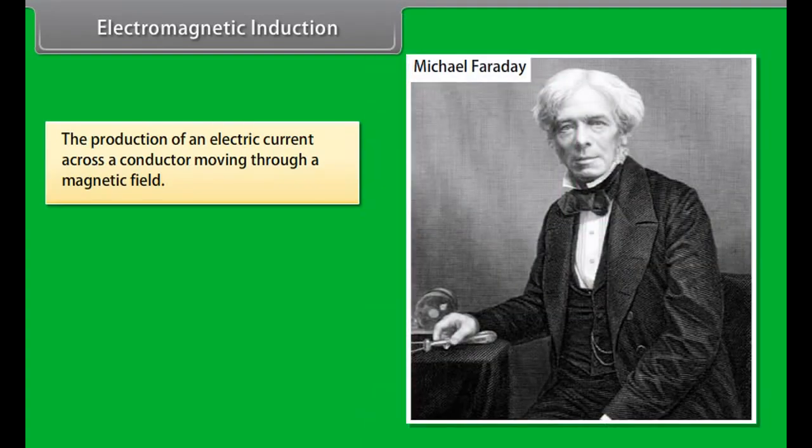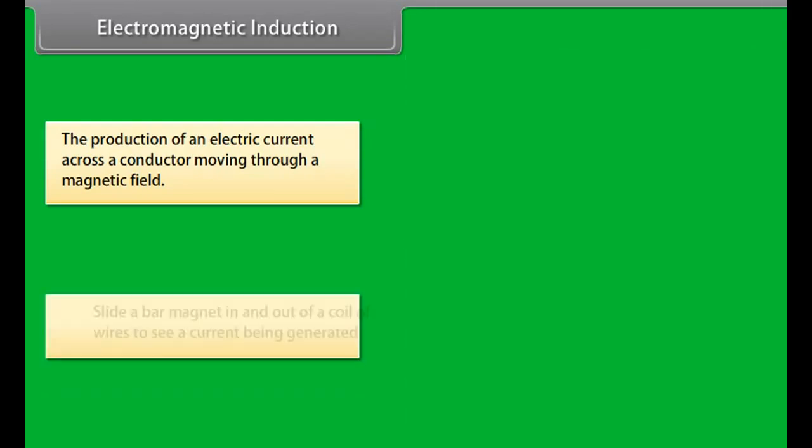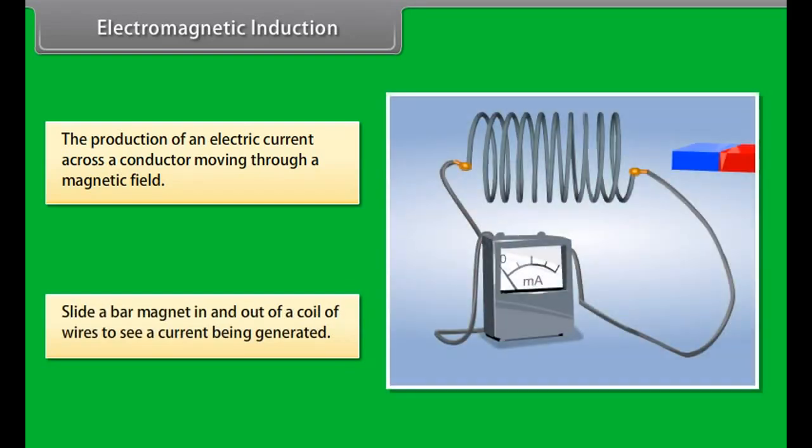Electromagnetic Induction. The production of an electric current across a conductor moving through a magnetic field is called electromagnetic induction. For example, generators, transformers, induction motors, electrical motors, synchronous motors and solenoids all use electromagnetic induction.